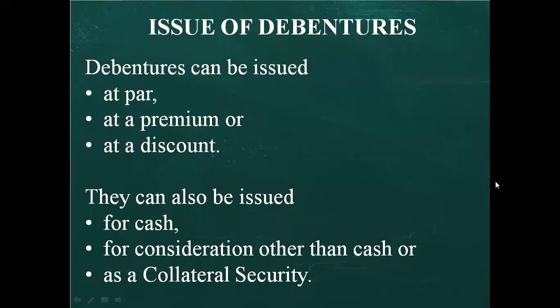Debentures can be issued at par, at premium, and at discount. Debentures can also be issued for cash, for consideration other than cash, and as collateral security. These are the different cases for which we have to learn journal entries.